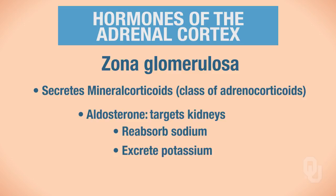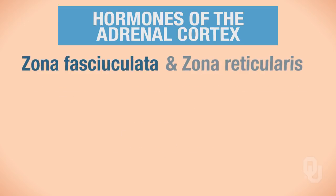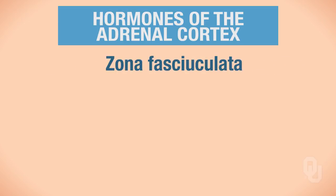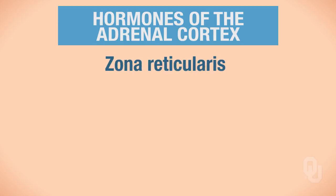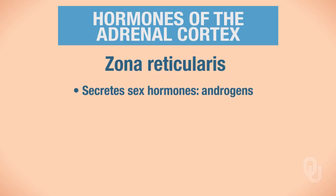The other two layers of the adrenal cortex — the zona fasciculata and the zona reticularis — are also very important. The zona fasciculata primarily secretes a class of adrenocorticoids called glucocorticoids. An example of a glucocorticoid is cortisol, a stress hormone. Be sure to watch the video lecture on cortisol feedback and function. The zona reticularis primarily secretes sex hormones called androgens.